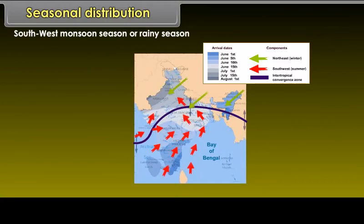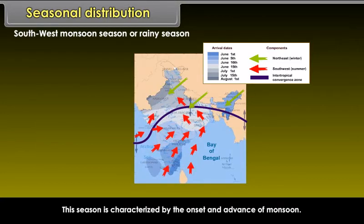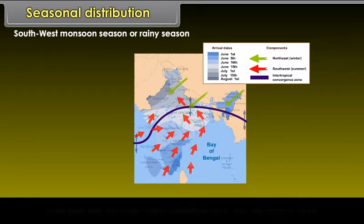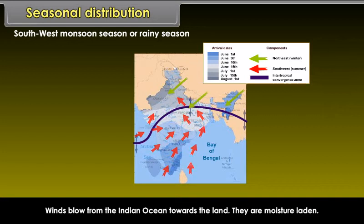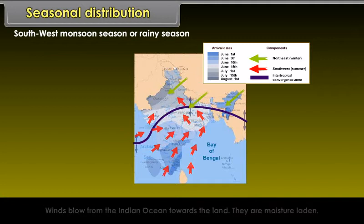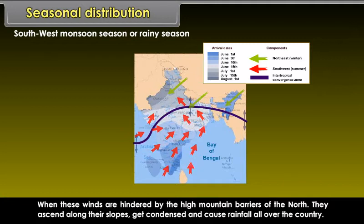The southwest monsoon season or rainy season is characterized by the onset and advance of monsoon. Winds blow from the Indian Ocean towards the land and are moisture-laden. When these winds are hindered by the high mountain barriers of the north, they ascend along their slopes, get condensed and cause rainfall all over the country.